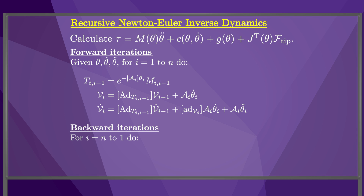Now we begin the backward iterations from frame n to frame 1. First, we calculate the wrench f_i required by link i as the sum of the wrench required by link i+1 expressed in frame i, plus the wrench required by link i according to the inverse dynamics of a rigid body derived in the previous video. Finally, we calculate the joint torque tau_i by projecting the wrench f_i onto the screw axis A_i. We now have the vector tau of all joint forces and torques needed for a given theta, theta dot, theta double dot, and end-effector wrench f-tip.